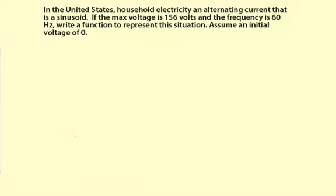In the United States, household electricity is an alternating current that is a sinusoid. If the max voltage is 156 volts and the frequency is 60 Hertz, write a function to represent the situation. Assume an initial voltage of zero.